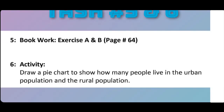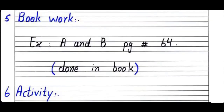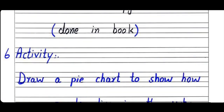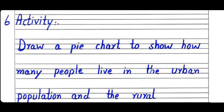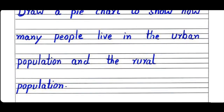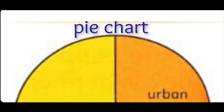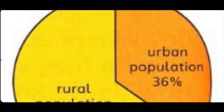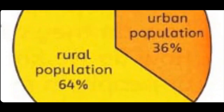Task Number 5: Book work - Exercise A and B, page number 64, done in book. Task Number 6: Activity - Draw a pie chart to show how many people live in urban population and rural population.